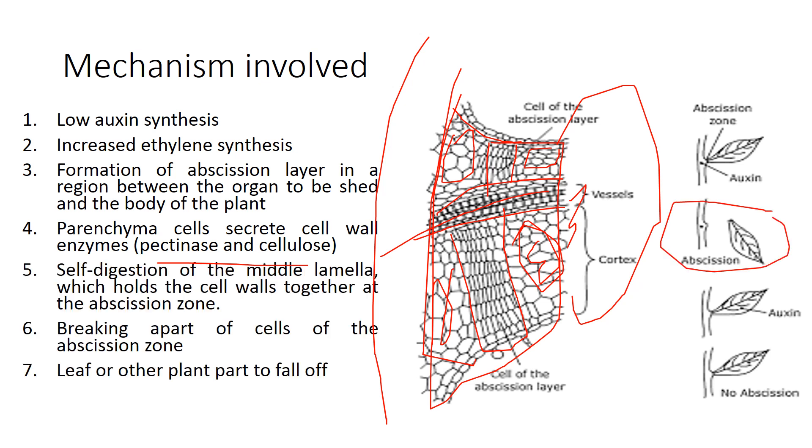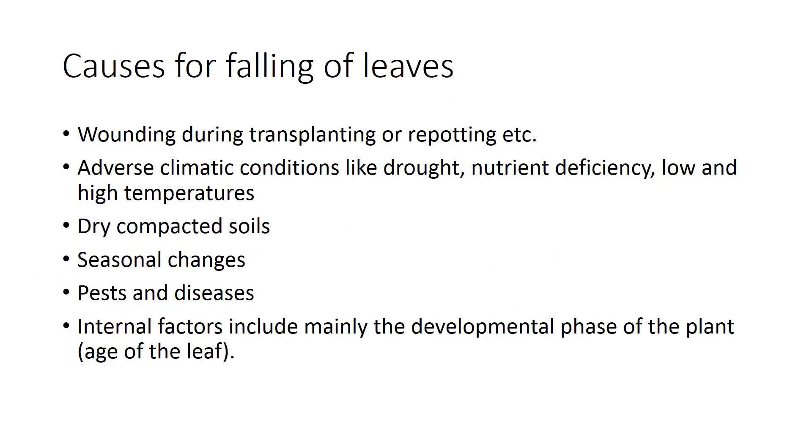In this way, the mechanism is involved in leaf falling. Now, what are the reasons behind the falling of the leaves? The first reason is when you transplant or repot, the root system may be damaged. Adverse climatic conditions like drought, nutrient deficiency, low and high temperatures, dry compacted soils also cause leaf fall.